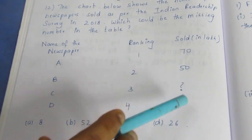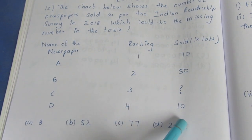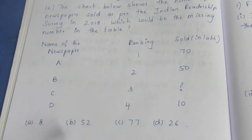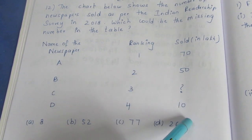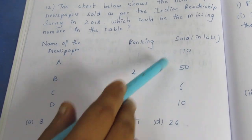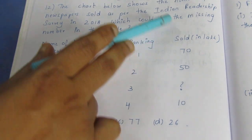The values are 70, 50, 10. The options given are 8, 52, and 77.